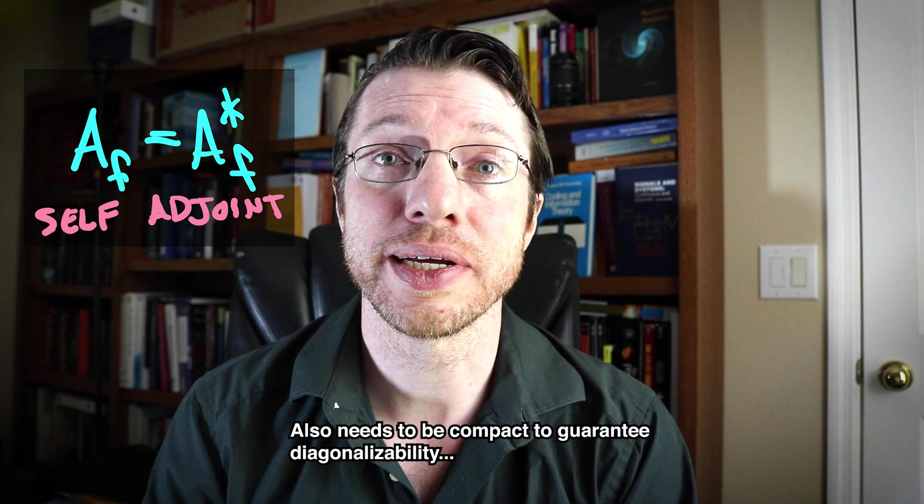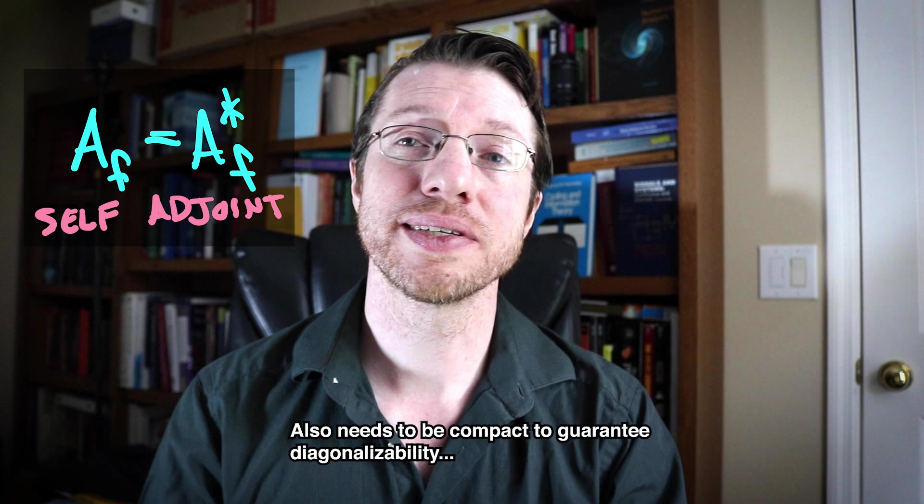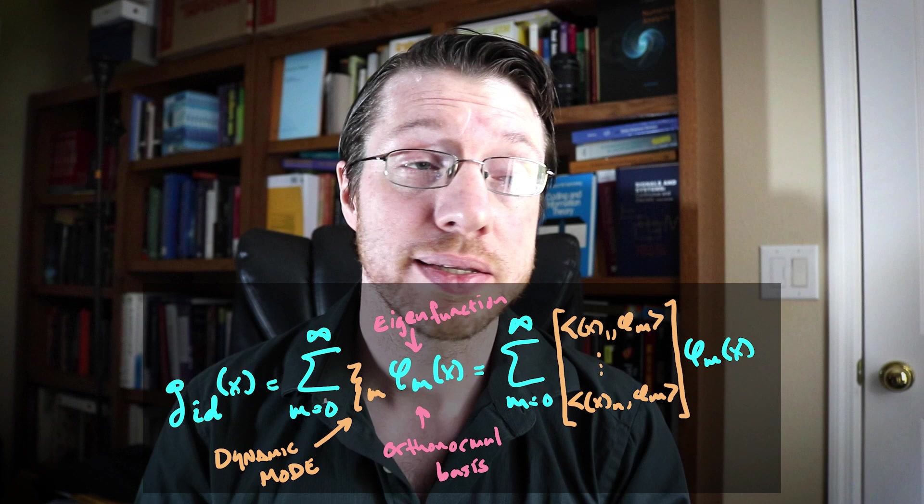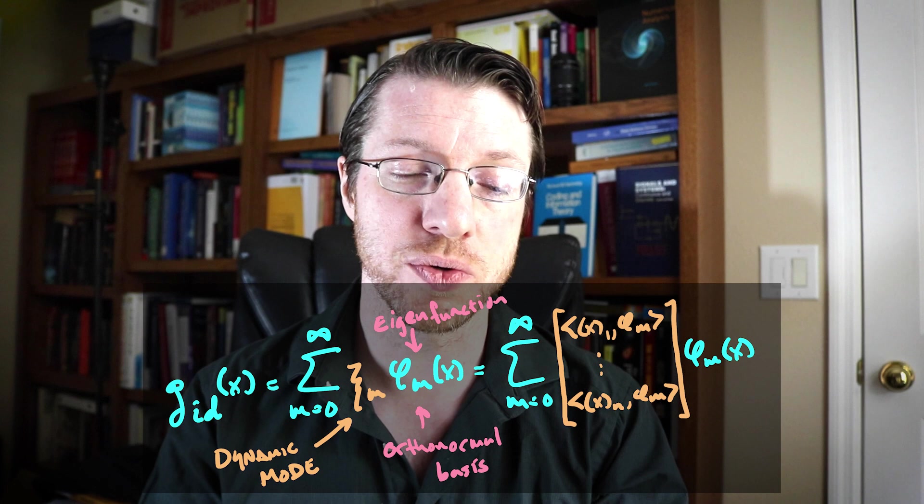If your Koopman operator or your Liouville operator actually manifests as a self-adjoint operator, then we have a whole bunch of theorems from spectral theory that tell you that you should get an orthonormal basis that diagonalizes your operator. We've even seen that this can work for unbounded operators, where in quantum mechanics, the Schrodinger operator that represents the quantum harmonic oscillator actually is diagonalizable by the Hermite functions. So when you have an orthonormal eigenbasis coming from a self-adjoint operator, then you do have well-defined Koopman modes.